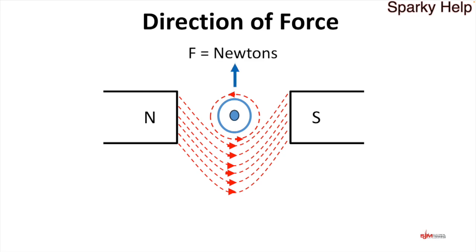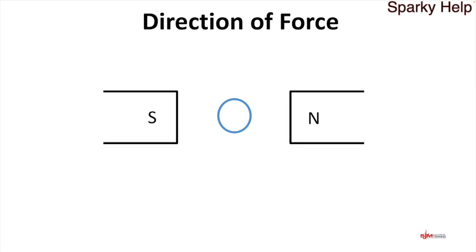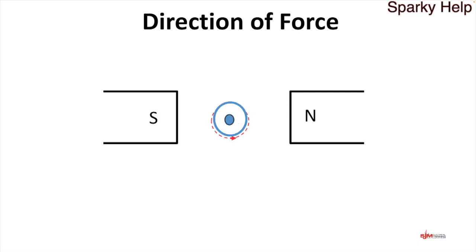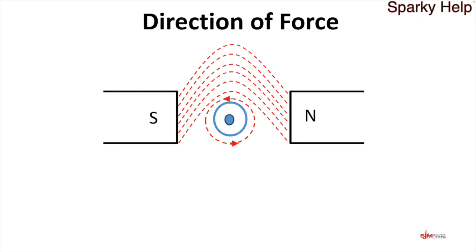Change the poles of the magnets. Current going into the screen, going in a clockwise direction. They're dragged round and this time the force is going up. And if we put it around the other way again, the force will go back down. So providing you change one, it can be the poles of the magnet or the current through the conductor, the force direction will change.